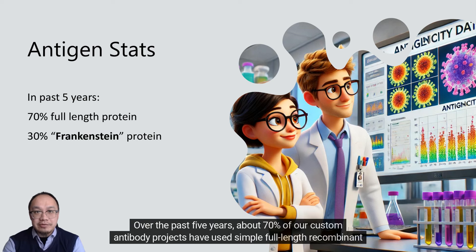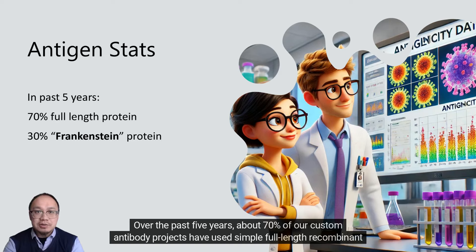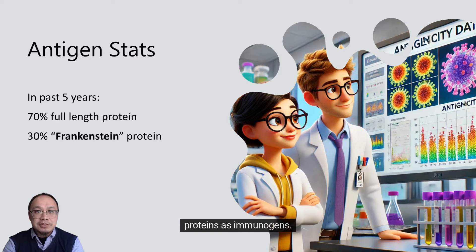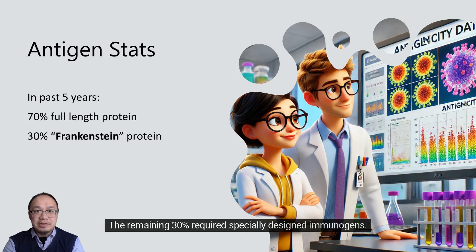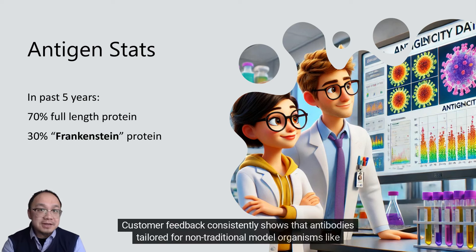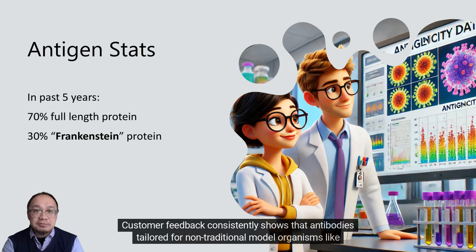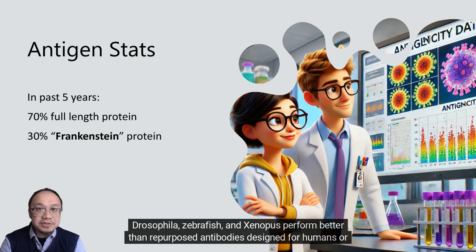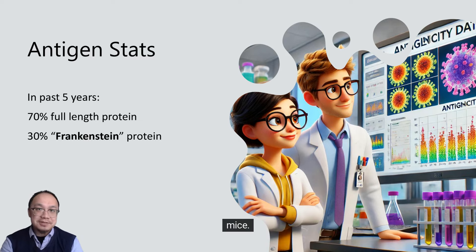Over the past five years, about 70% of our custom antibody projects have used simple, full-length recombinant proteins as immunogens. The remaining 30% required specially designed immunogens. Customer feedback consistently shows that antibodies tailored for non-traditional model organisms like Drosophila, Zebrafish, and Xenopus perform better than repurposed antibodies designed for humans or mice.